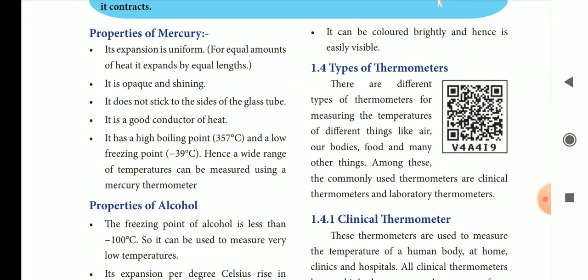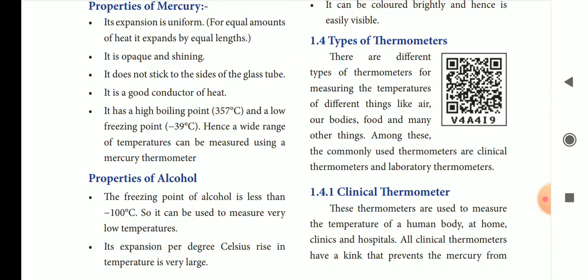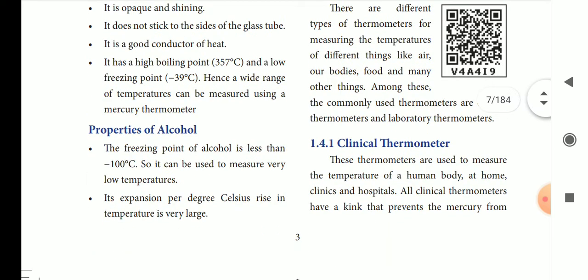If you look at the properties of mercury: mercury expands with heat. It is an opaque liquid. It does not stick to the sides of the glass tube. It is a good conductor of heat. Its boiling point is 357 degrees Celsius and its low freezing point is minus 39 degrees Celsius, so it is used in thermometers to measure temperature.